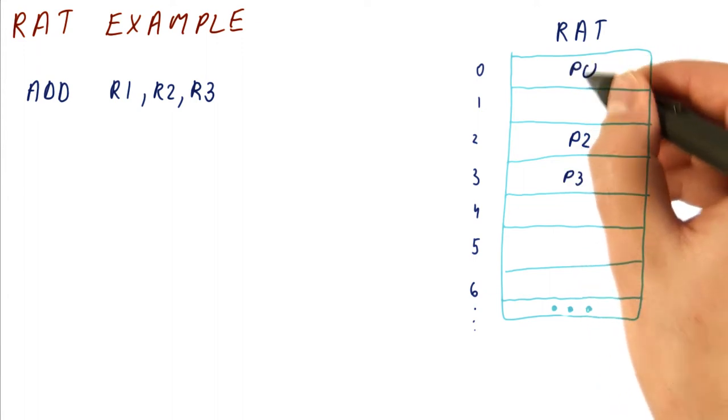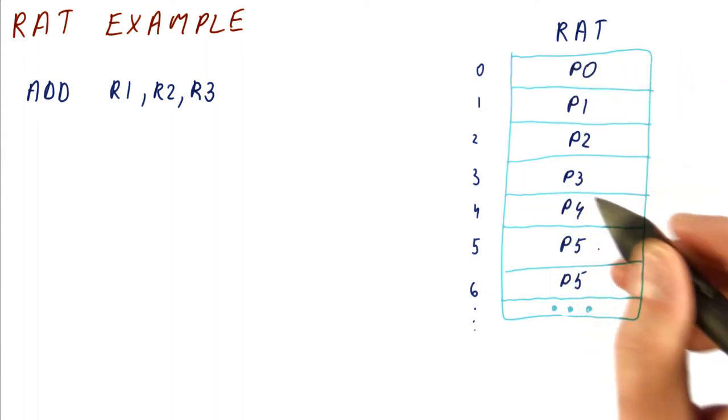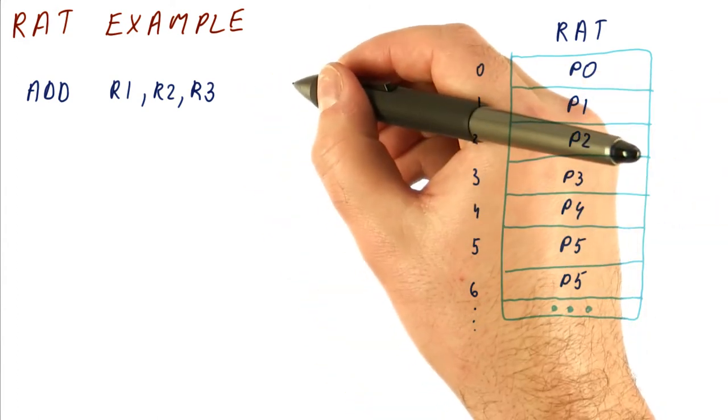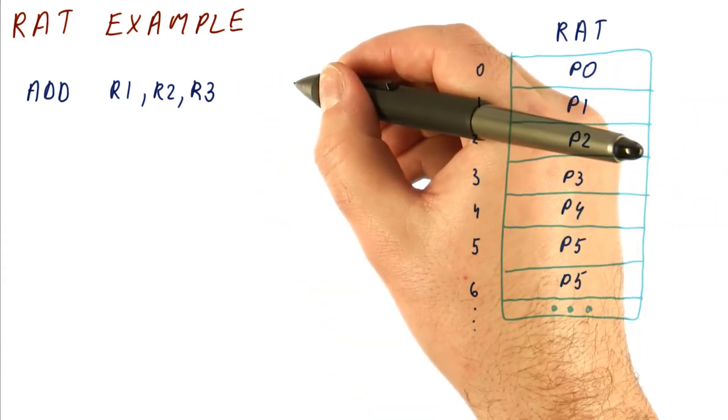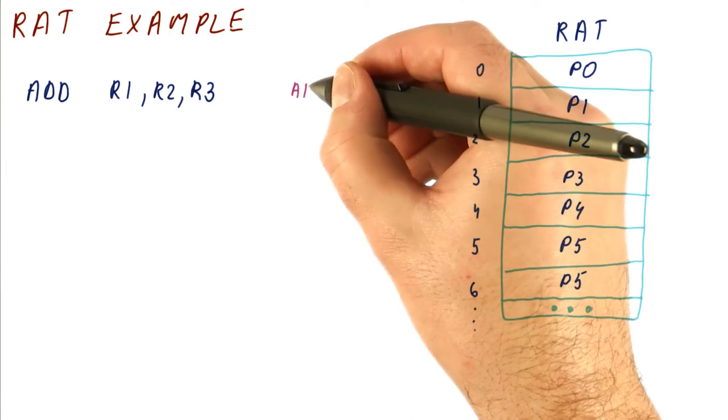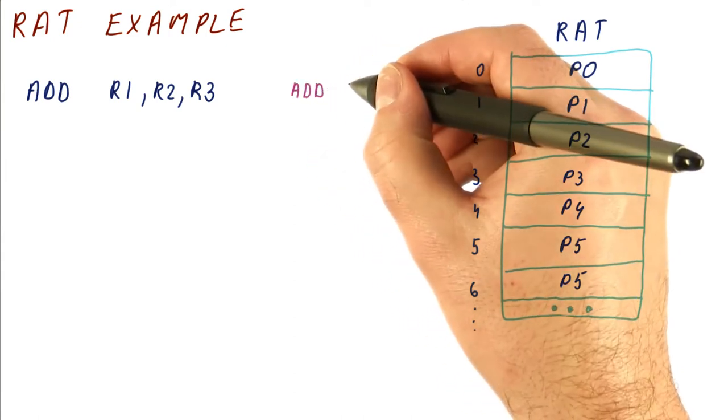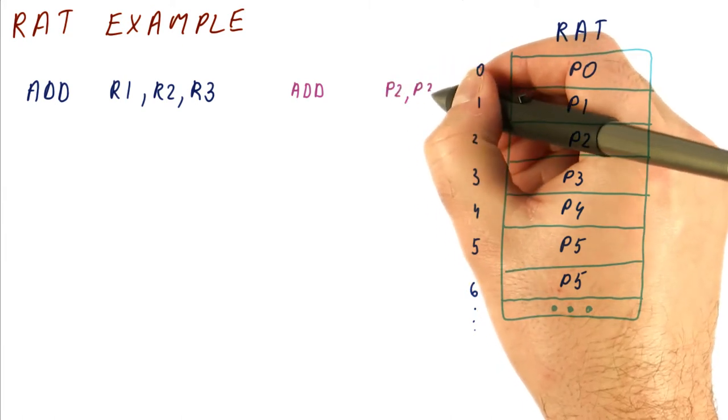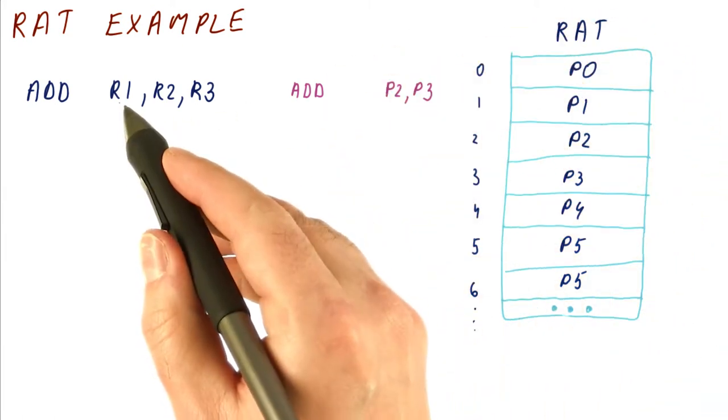In fact, let's say that all of them are just like this. So what the processor does is it renames this instruction. So it fetches it, decodes it, and then rewrites it so that the actual operation that will be done is going to be on physical registers P2 and P3.